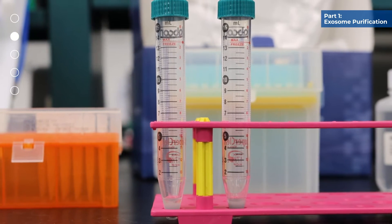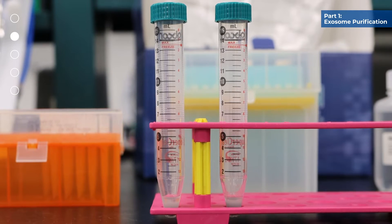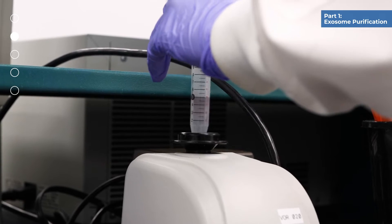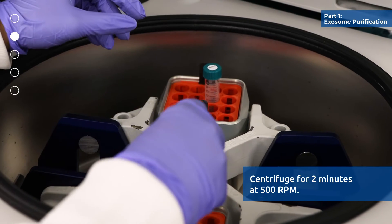Incubate the slurry pellet re-suspended in the 200 microliter exo R buffer at room temperature for 5 minutes. After incubation, mix well by vortexing for 10 seconds. Then centrifuge for 2 minutes at 500 rpm.